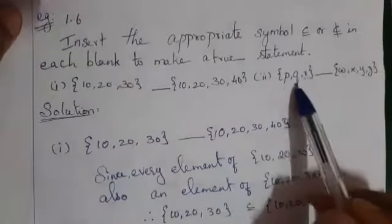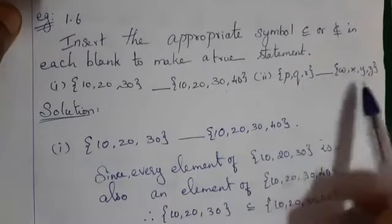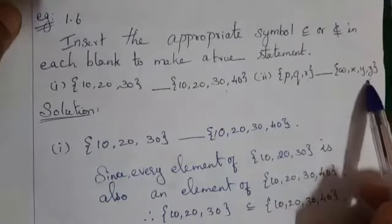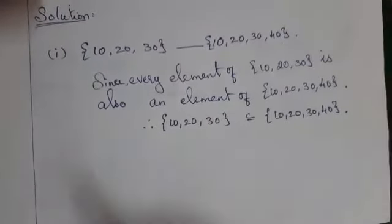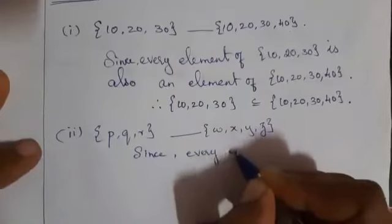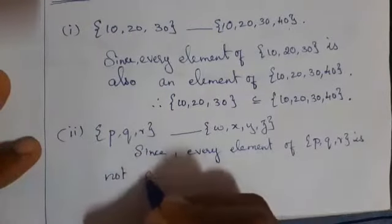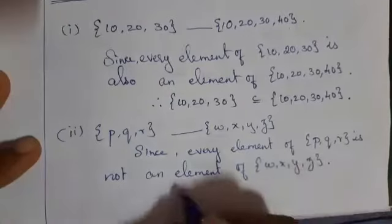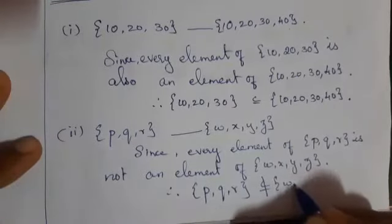See the second question: {P, Q, R} — is it a subset of {W, X, Y, Z}? Can you guess the answer? P is not present in the second set. Immediately you can say this is not a subset. Since every element of {P, Q, R} is not an element of {W, X, Y, Z}, therefore {P, Q, R} is not a subset of {W, X, Y, Z}.